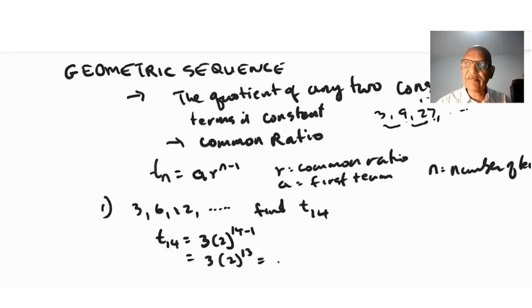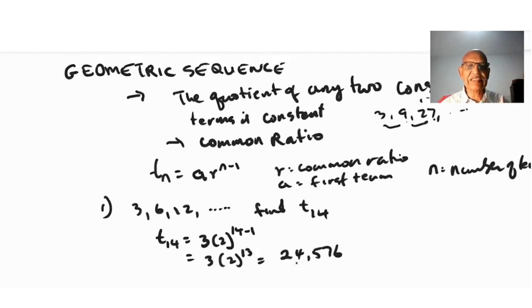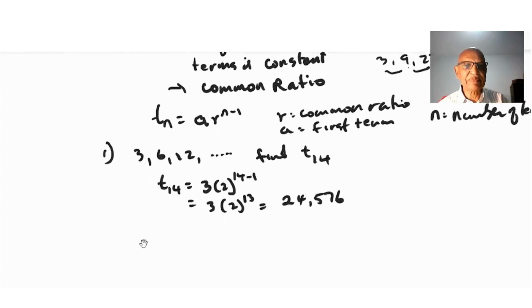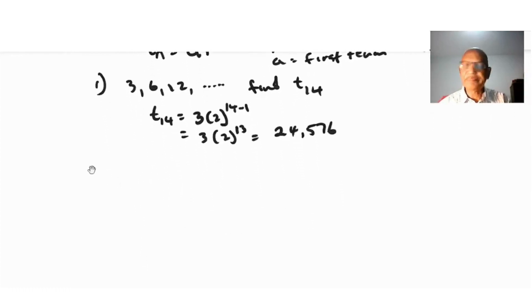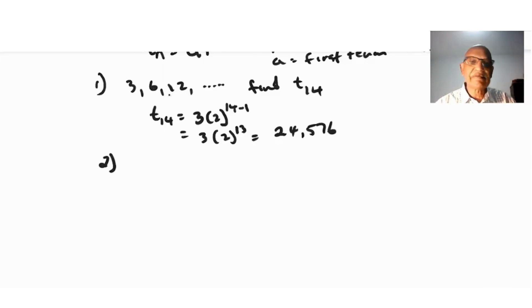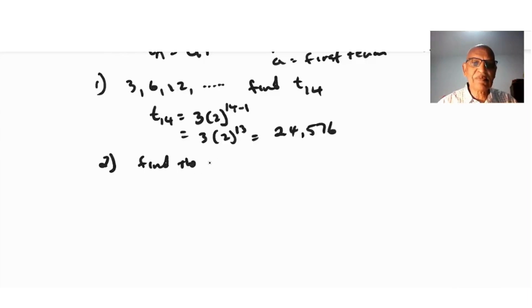So T14 = 3 · 2^(14-1) = 3 · 2^13. Using a calculator, 2^13 = 8192, giving us 3 × 8192 = 24,576. So the 14th term is 24,576.